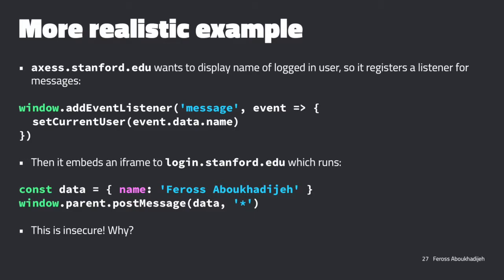This can be used for tracking. Any site on the internet can literally just embed an iframe to login.stanford.edu and find out if you're logged into your Stanford account, along with your full name. So you can imagine maybe this page should check who it's sending this data to, so it's not sending it so indiscriminately - that would be one solution. Another issue: access is including this frame and expecting a message to follow containing the username, but that message could actually come from any page that has a reference to this window. The API just says a message was sent to me - it doesn't specify where the message came from.